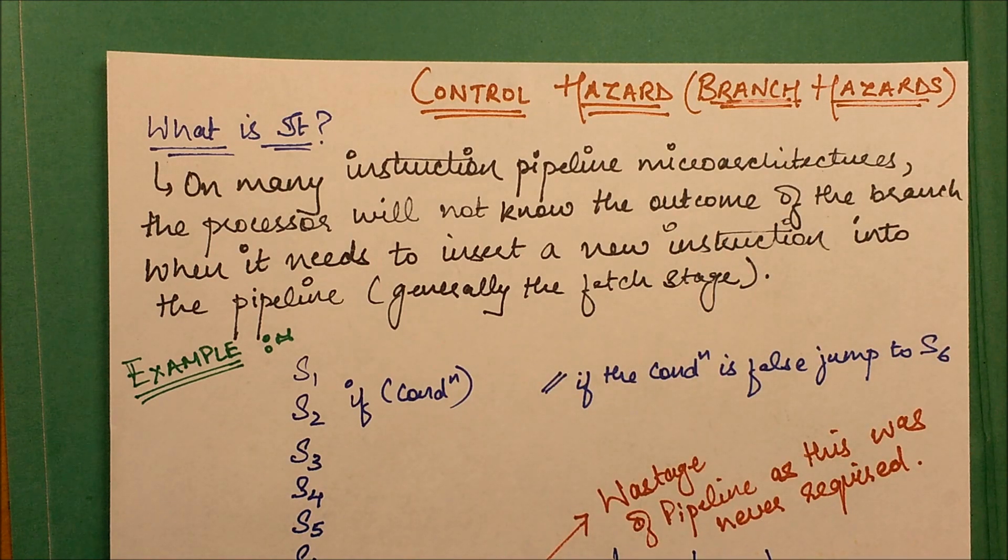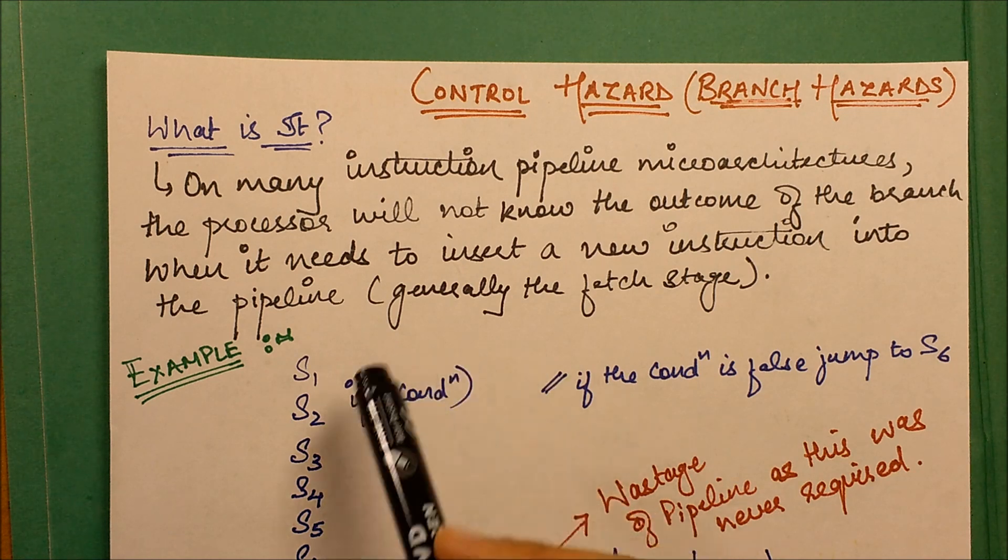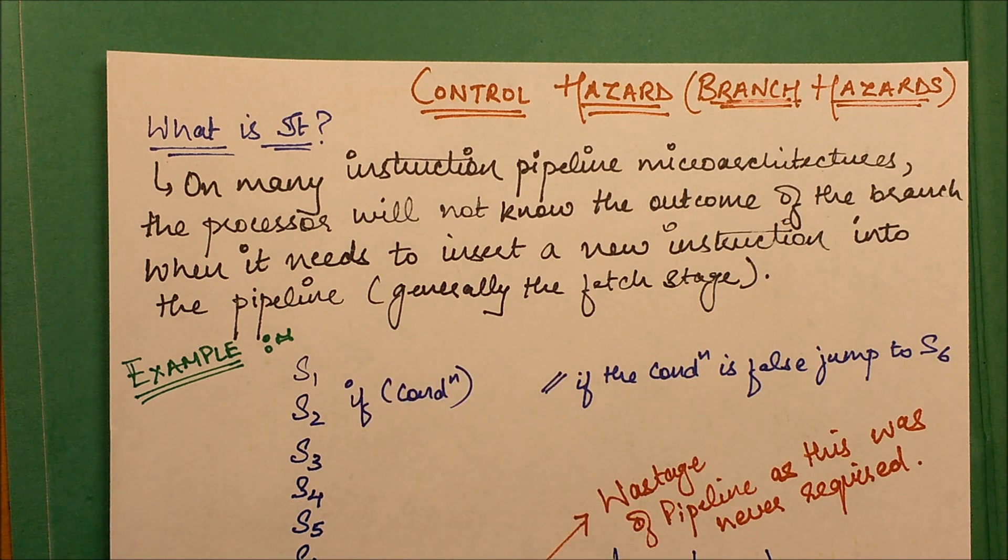The branch instruction condition is getting processed at that time. The condition result takes time to process, so it gets the result later on. By that time it has already inserted some instructions in its pipeline and started processing. That time gap is basically the cause of inconsistency or we can say the resource wastage in this case.